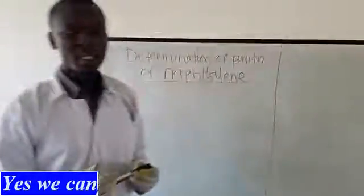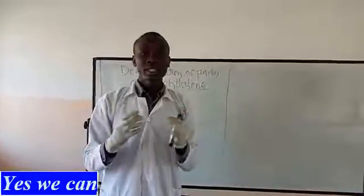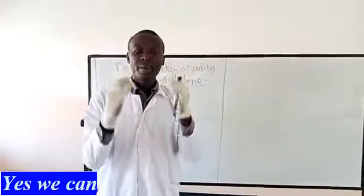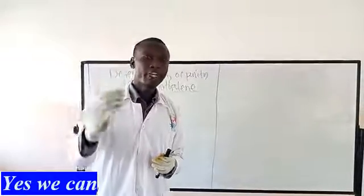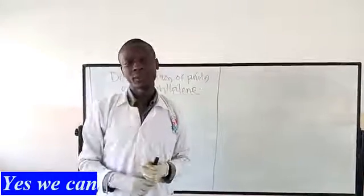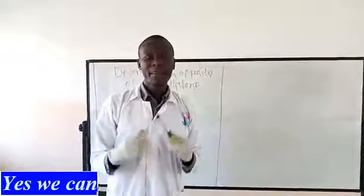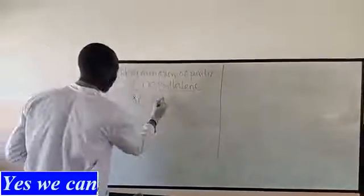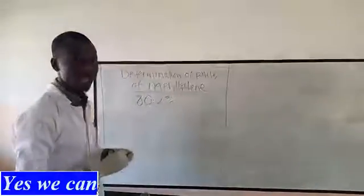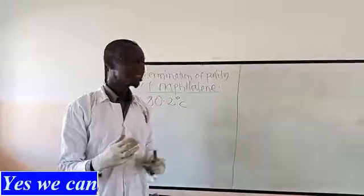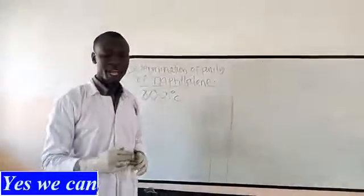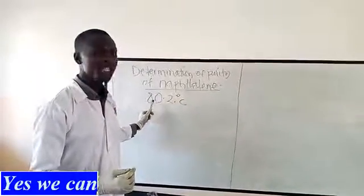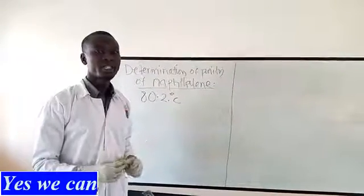To remind ourselves: for a solid substance to be said to be pure, it should have a constant melting point which is equal to the theoretical melting point found in books. For naphthalene, the melting point is 80.2 degrees Celsius — that is for pure naphthalene. Therefore, if we carry out an experiment and the naphthalene we have melts at 80.2 degrees Celsius, then we shall say that that naphthalene is pure.